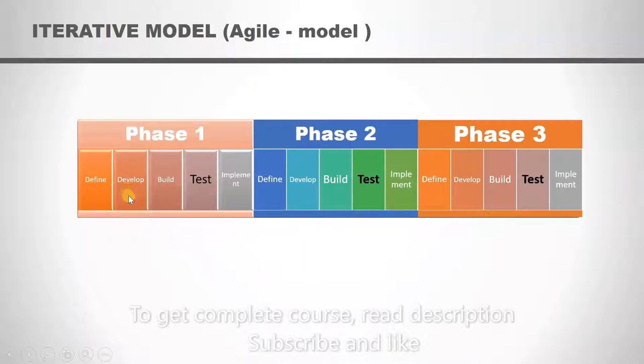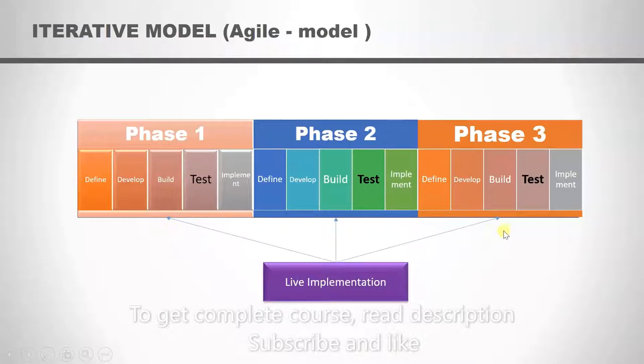This is how the agile method works. Each phase has define, develop, build, test, and implement. So we can see that live implementation of the software will happen in all the phases. We are repeating the steps in each one, and this is why it is called an iterative development model. You reiterate in every phase.